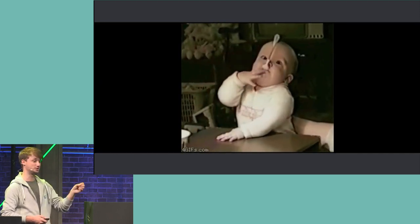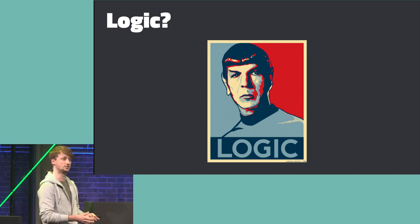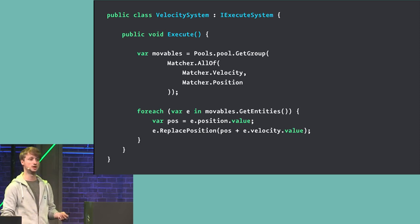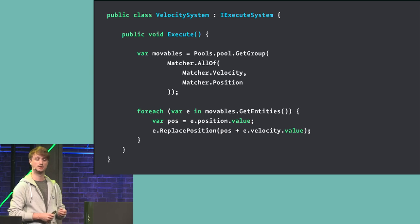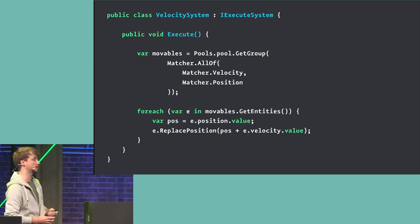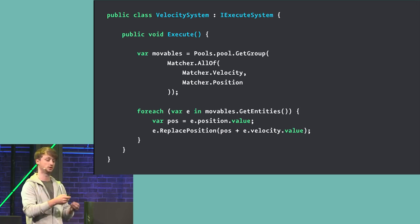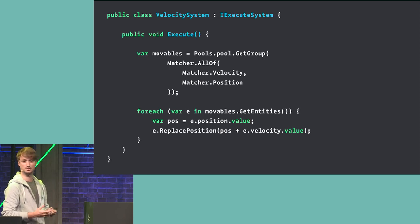So that's the data and state — what about the logic? For a game or application, we need logic to work on this data. In Entitas, all logic belongs to systems. Here's a velocity system example. It takes an existing position and velocity, adds them together, and calculates the new position. In the execute method, we ask the pool for a group: give me everything that has a velocity and a position. At this point we don't care if it's a car, spaceship, bird, or stone — as long as it has velocity and position, we process it. We iterate over those entities and replace the position by adding the velocity. This system does one single thing, applying the single responsibility principle, and it's easy to test: set up an entity with position and velocity, run the system once, and assert the new position.